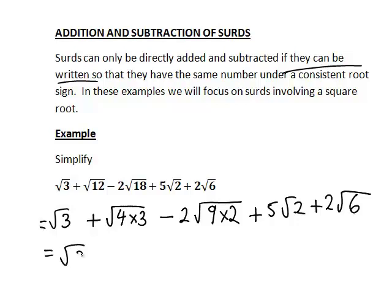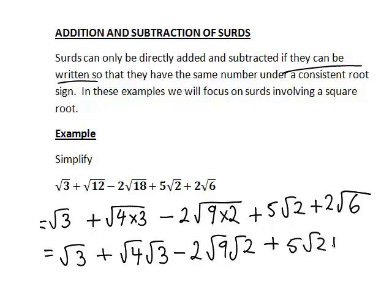Now continuing on to the next stage. √(4×3) - let's break that up as √4 × √3. We can leave off that multiplication sign to make that look a bit simpler when working with surds like this. The next one, -2√(9×2), breaking that up in the same way as -2√9√2. And then our last two terms remain unchanged here.